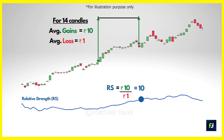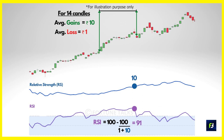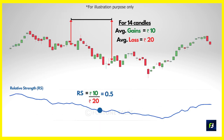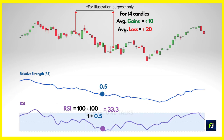Let's take the case where the average gain is 10 rupees and the average loss is 1 rupee. Taking 10 divided by 1, RS equals 10. Plugging into the formula gives an RSI of about 91, showing strong momentum. In another situation where average gain is 10 rupees but average loss is 20 rupees, RS equals 0.5, giving an RSI of 33.34 — because average loss is greater than average gain, indicating more bearish momentum.